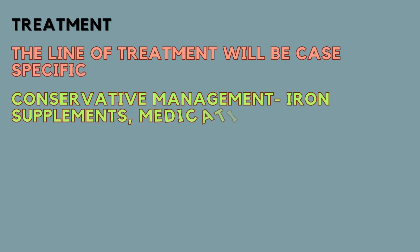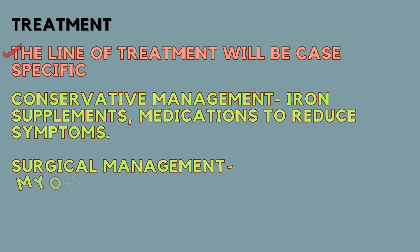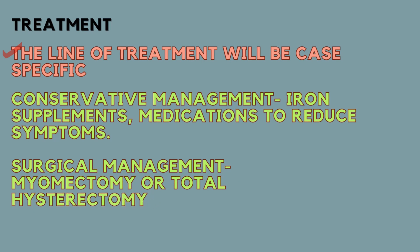The line of treatment is decided by the doctor and is purely case-specific, depending on the severity of symptoms. If the woman is asymptomatic, no treatment is needed. In symptomatic cases, treatment depends on symptom severity and the fertility status of the woman. Conservative management includes iron supplements and symptomatic medications to reduce pain and bleeding. Surgical management includes myomectomy or total hysterectomy, considered if conservative management fails or if symptoms are of greater severity.